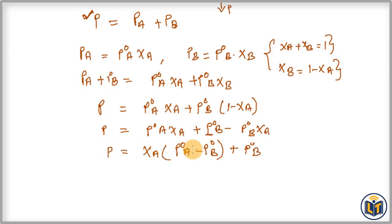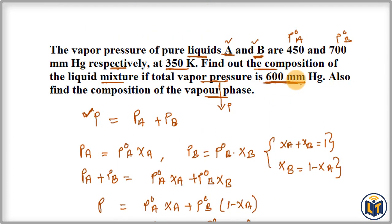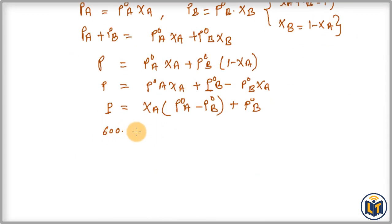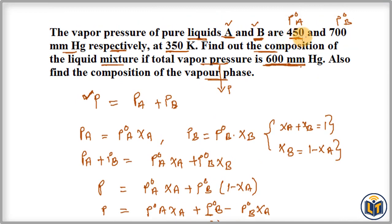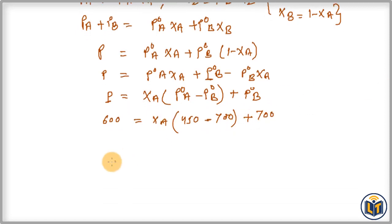Now we can plug in the values. P (total vapor pressure) is 600 mmHg, P°A is 450 mmHg, and P°B is 700 mmHg — all in the same units, so no conversion is needed. Substituting: 600 = XA(450 − 700) + 700, which gives 600 = XA(−250) + 700.